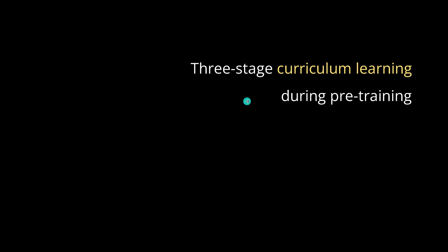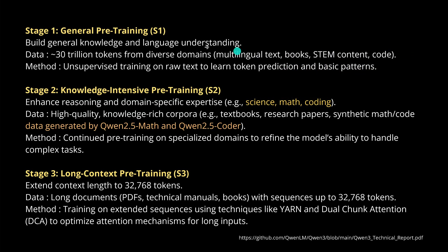The pre-training is a beautiful three-stage curriculum learning implementation right from the textbook. Stage one is general pre-training for general language understanding. QwQ3 supports 119 languages across a diverse variety of expertise. The data were about 30 trillion tokens from real diverse domains: multilingual text, books, STEM content, code - unsupervised pre-training on raw text to learn token prediction.